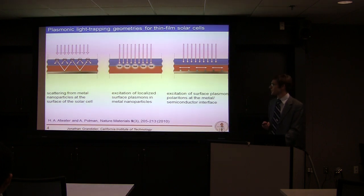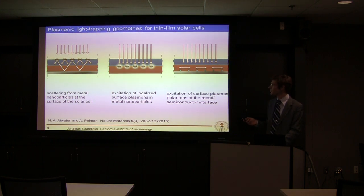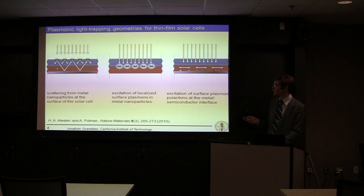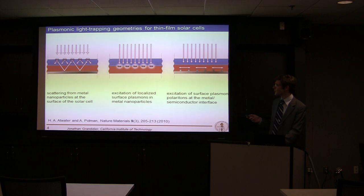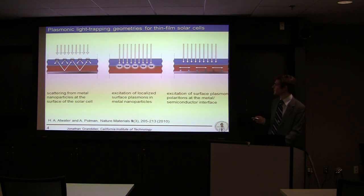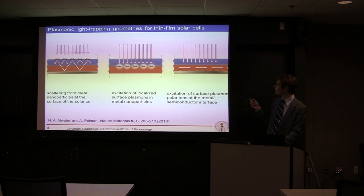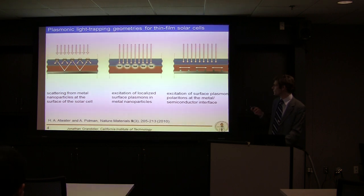Another way to induce light trapping is to use some plasmonic light trapping geometries for thin film solar cells. There are three different cases represented. We can have the metallic nanoparticle on the top in order to scatter in every direction and therefore increase the path length of the light. We can also think of having localized surface plasmons in the metal nanoparticle, especially at the interface of the nanoparticle. Other ways could also be to have some waveguide mode, or some surface plasmon modes that could be excited by a grating-type structure.